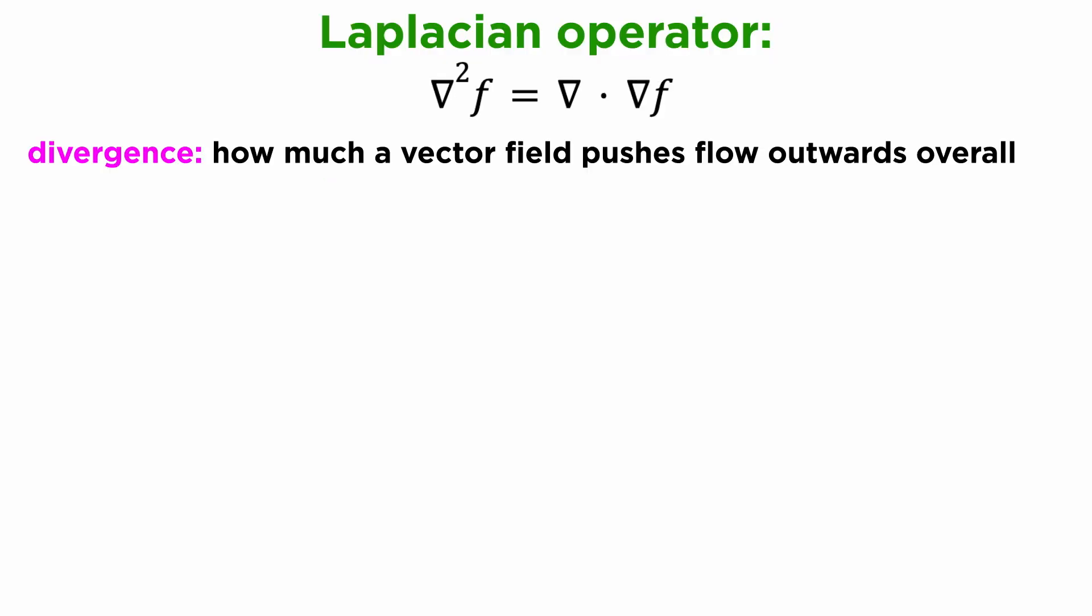Recall that the divergence of a vector field tells us how much the field tends to push flow outwards overall, whereas the gradient of a scalar field tells us a vector in the direction of steepest ascent on the surface represented by the scalar field.